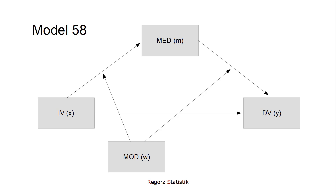In the case of model 58, the moderator only moderates the A path and the B path. For model 59, the moderator also moderates the direct effect C prime. I would always use model 59 because if you use model 58 but in reality the C prime path is moderated, then you can get highly biased results. With model 59, you are safe because if the direct effect is not moderated, you simply get a non-significant moderation for the direct effect. So please always use model 59 instead of model 58.